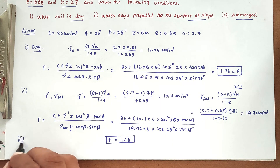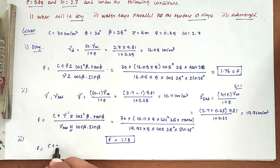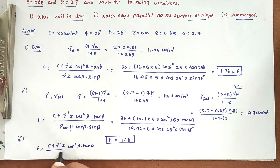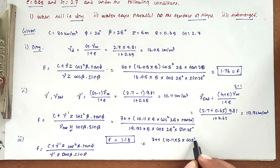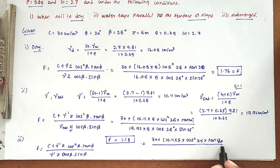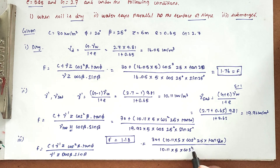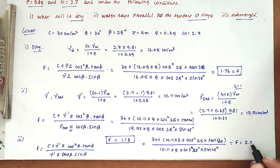Third condition: when the soil is submerged. The factor of safety formula is: F equals C plus gamma_dash times Z times cos² beta times tan phi, divided by gamma_dash times Z times cos beta times sin beta. Substituting: 30 plus 10.11 times 5 times cos²(25°) times tan(20°), divided by 10.11 times 5 times cos(25°) times sin(25°). Solving this, the factor of safety when the soil is submerged is 2.33.